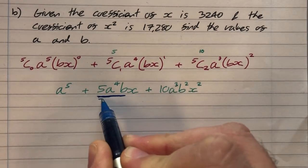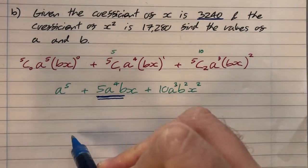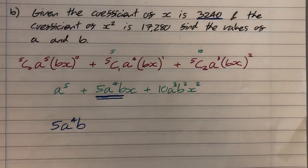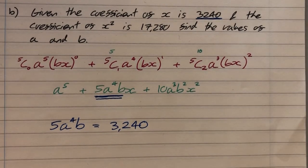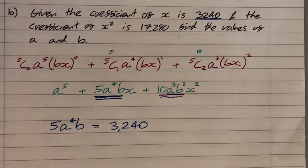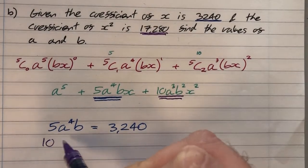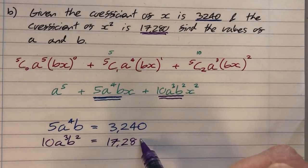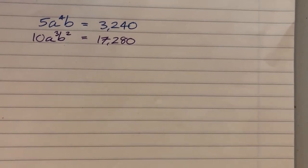So first things first, that's my coefficient of x. And we're told that the coefficient of x is 3240. So that tells us that 5 a to the power of 4 times b, we ignore the x because it's the coefficient of x, is equal to 3240. That's one equation which relates a and b. The second bit of information says the coefficient of x squared, which we know is 10 a cubed b squared, that is equal to 17,280. So that gives us a second piece of information which relates a and b. So we get 10 a cubed b squared is equal to 17,280.